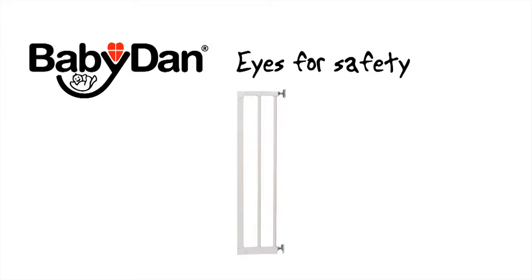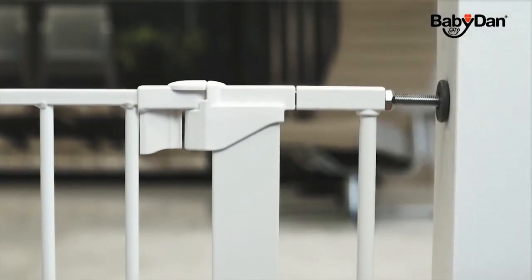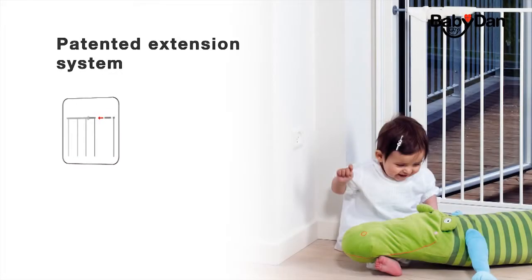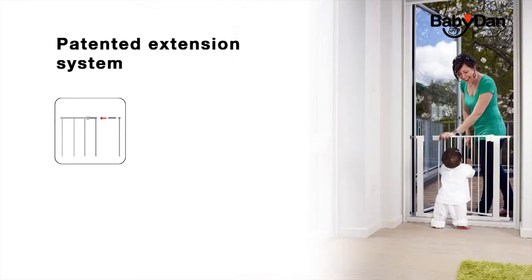With the patented extension system Extender Gate from the Danish company BabyDan, you can add up to six extensions to your BabyDan safety gate. All BabyDan extensions are made of metal and fit all our pressure-fit safety gates. You just have to pick the number of extensions you need and the color—available in white, silver, and black.